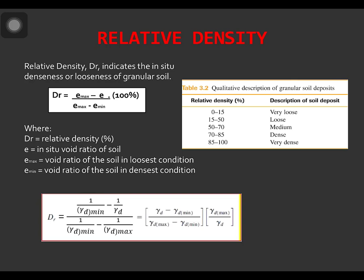Soil engineers qualitatively describe the granular soil deposits according to the relative density as shown here in the table. For a relative density of 0 to 15, it is described as very loose soil. For 15 to 50, it is loose, 50 to 70 medium, 70 to 85 dense, and 85 to 100 very dense.